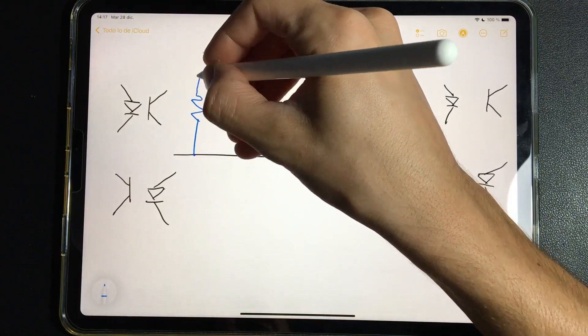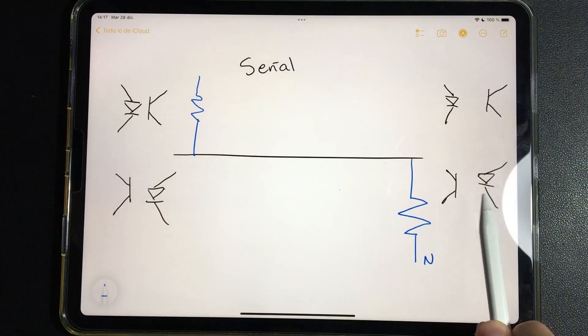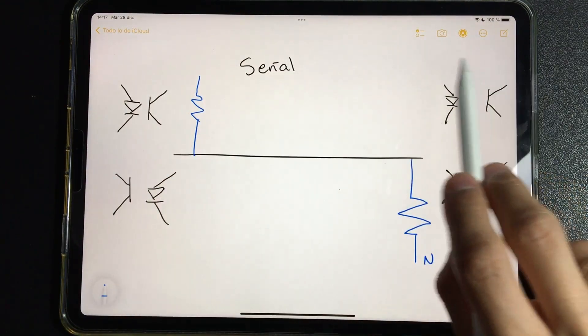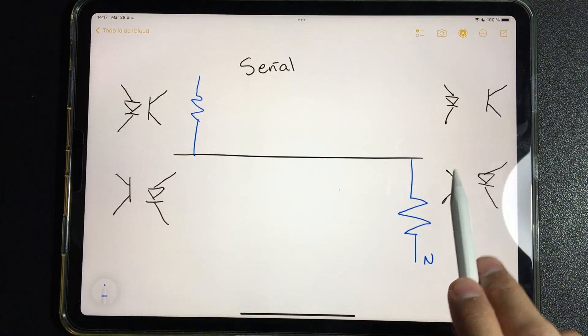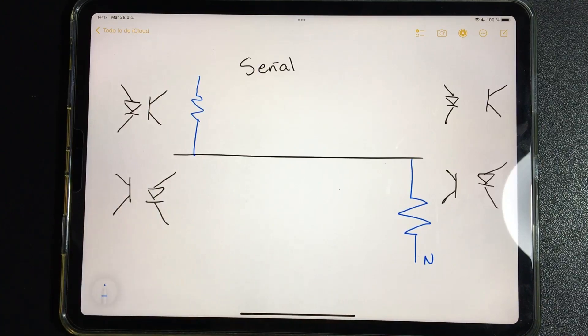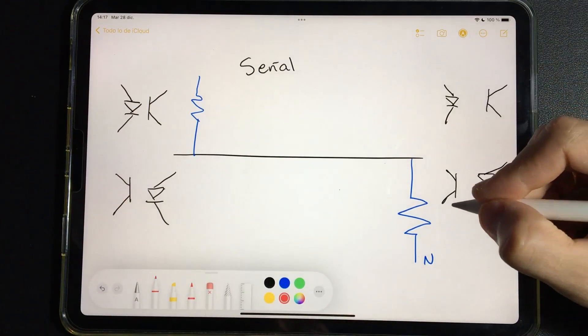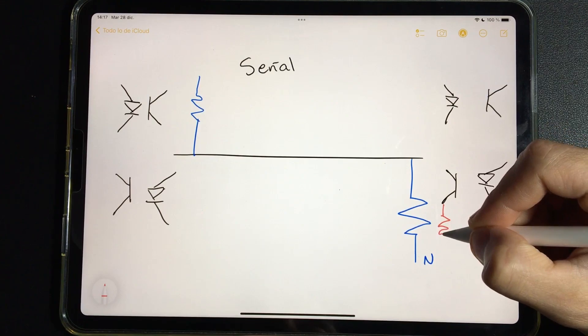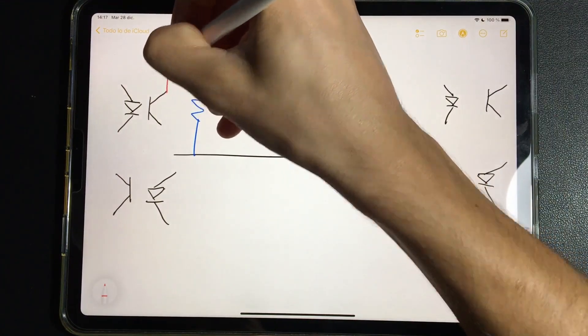What we are drawing here are the optocouplers with the four optocouplers. One LED on one side, one receiver on the other, LED receiver, LED receiver. We will write or draw and read the line.